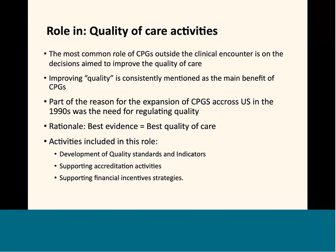By the late 1980s and early 1990s there was a huge expansion of guidelines, mostly by professional societies. One of the major factors historically highlighted as the reason for that was the need for regulating quality and increasing standardization among physicians. The rationale is straightforward: if we have best evidence, we think we are going to have the best quality of care. We found several roles and can group them in three major ideas: development of quality standards and indicators, supporting accreditation activities, and supporting financial incentive strategies.